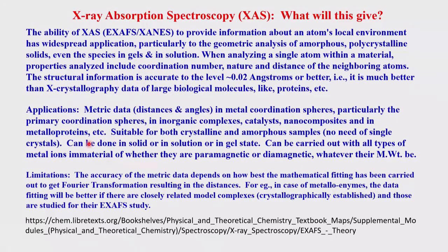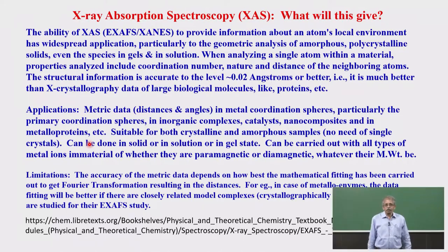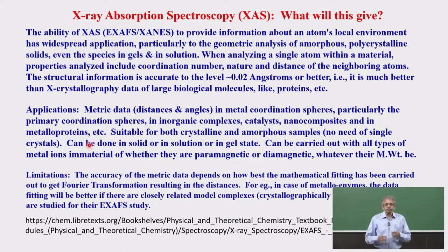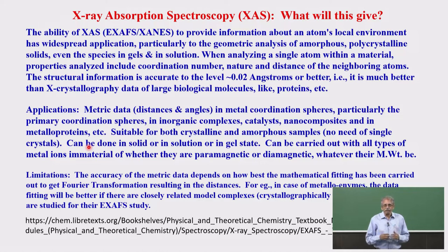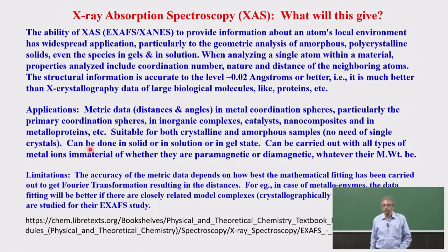What is X-ray absorption spectroscopy expected to give? With respect to a metal ion with ligands bound in primary coordination, and possibly secondary coordination, what you get from crystallography is the whole structure from the central metal ion outward. Here, this technique gives the primary and to some extent secondary coordination with all geometry parameters. Importantly, EXAFS and XANES do not require a single crystal — you can use polycrystalline, non-crystalline, amorphous, solution phase, or gel-like materials.